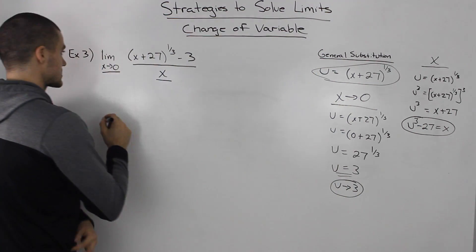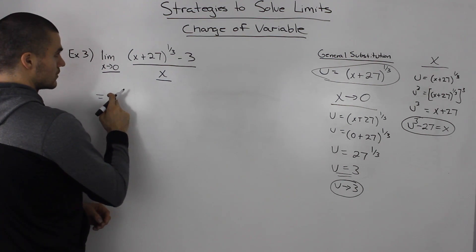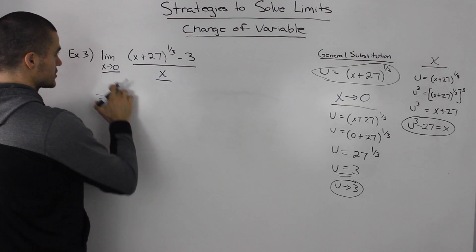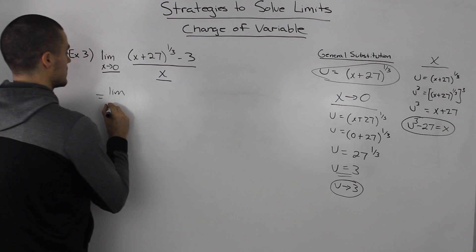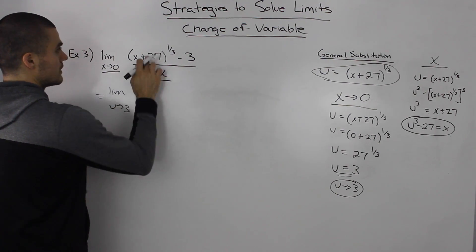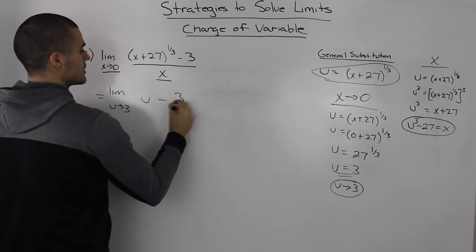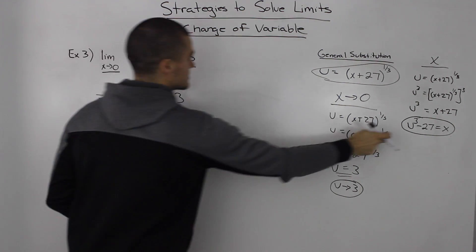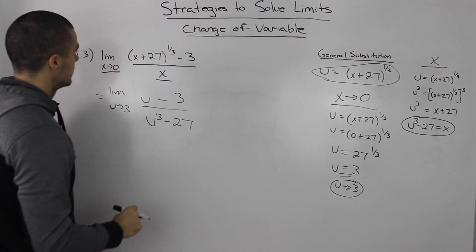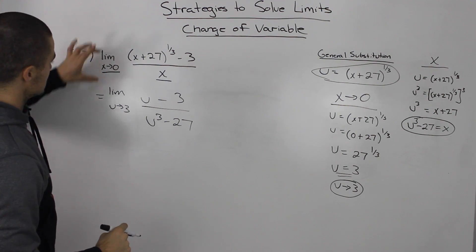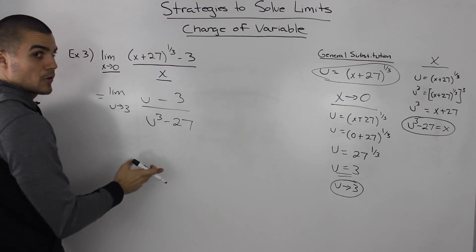The limit as x goes to 0 is equivalent to u going to 3. (x+27)^(1/3) is just u, minus this 3. And x equals u^3 - 27. So we took this limit in terms of x and now have a new limit in terms of u, and it's a lot smoother with no ugly exponents.